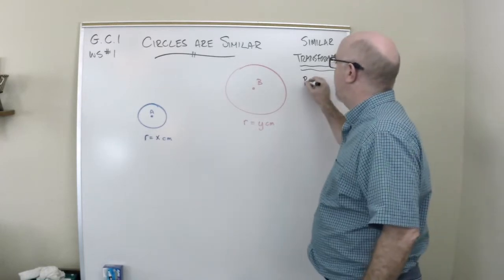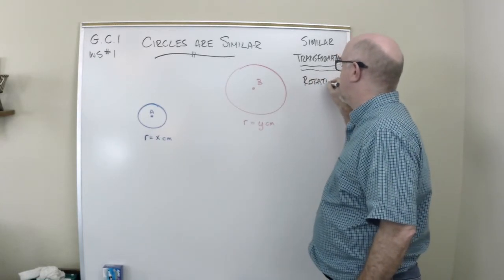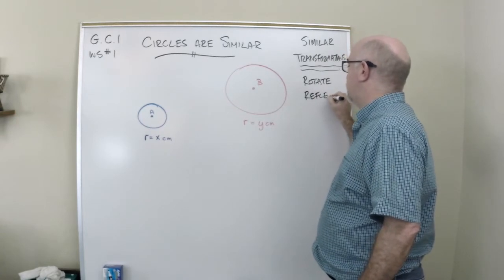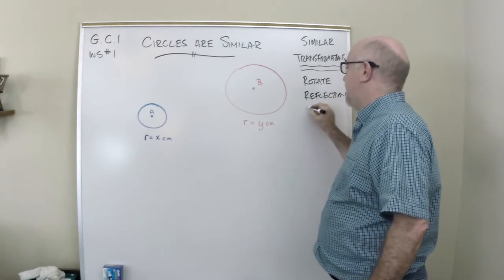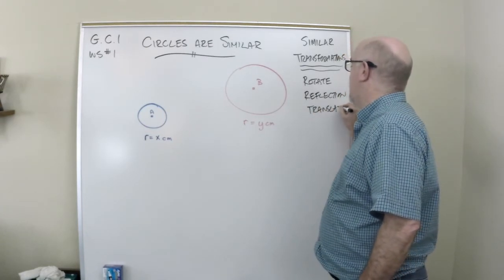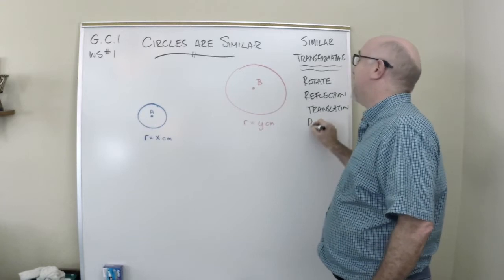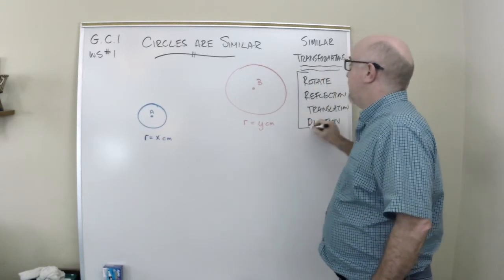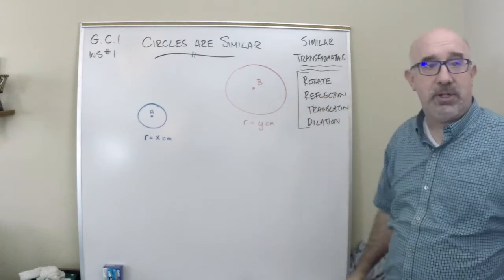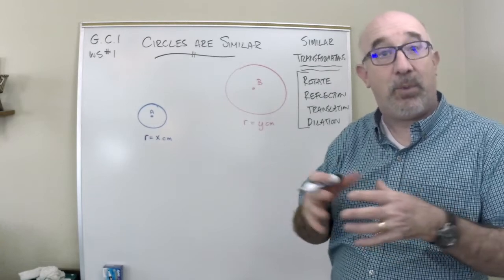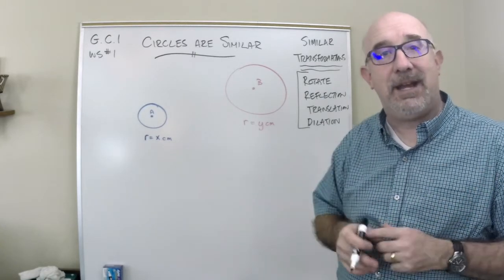And those are the rotation, the reflection, the translation, and, of course, the one you'd expect, the dilation. This group is a body of motion. They are able to keep the shape the same, proportional, and maintain the angles.